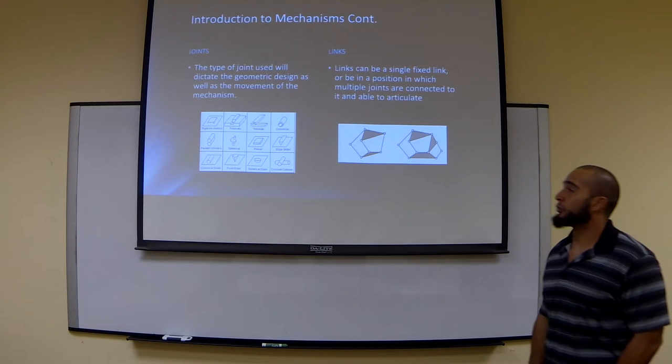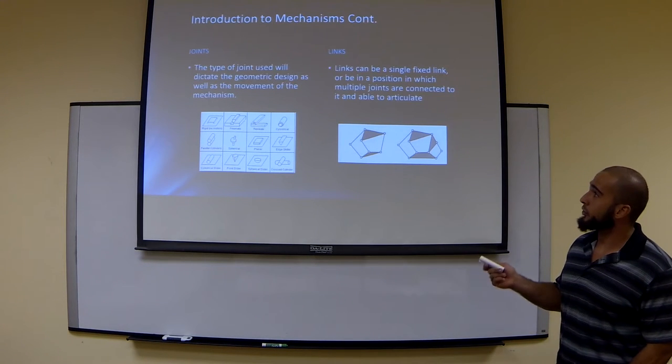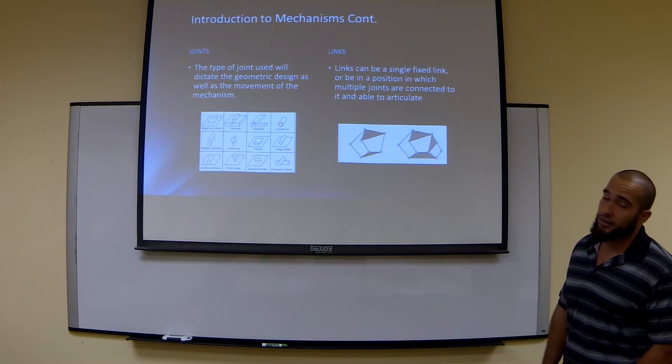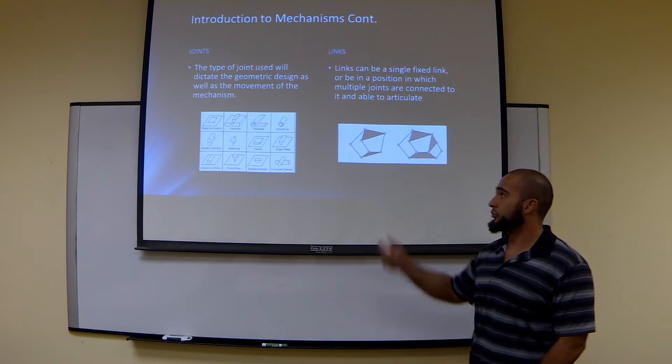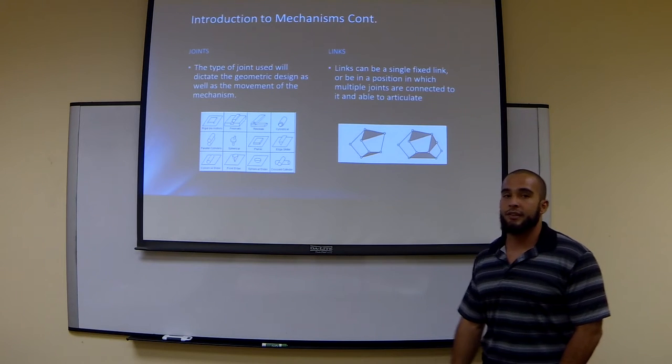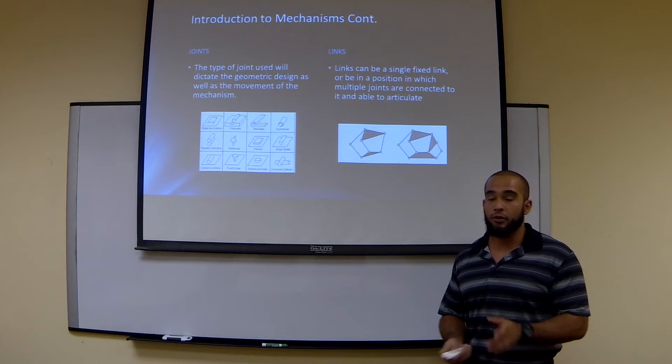For a mechanism to transfer work and motion effectively, there's two main components which influence and dictate the design. First is the joint. One of the most common joints used is a rigid joint. During mobility analysis, the rigid joint provides zero degrees of freedom because it doesn't allow any movement in any direction.